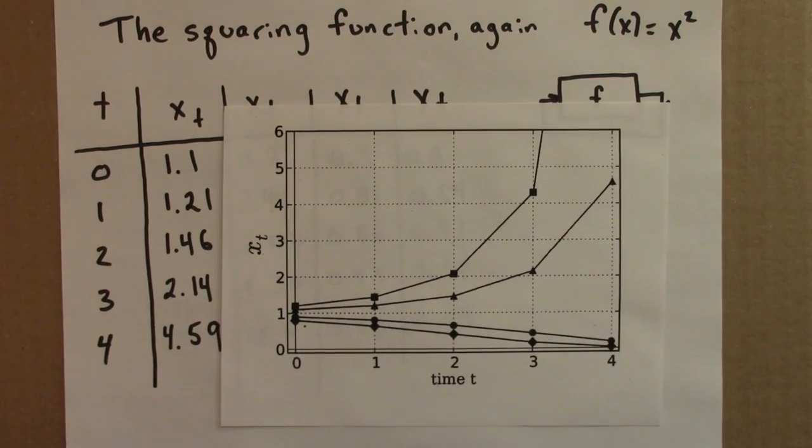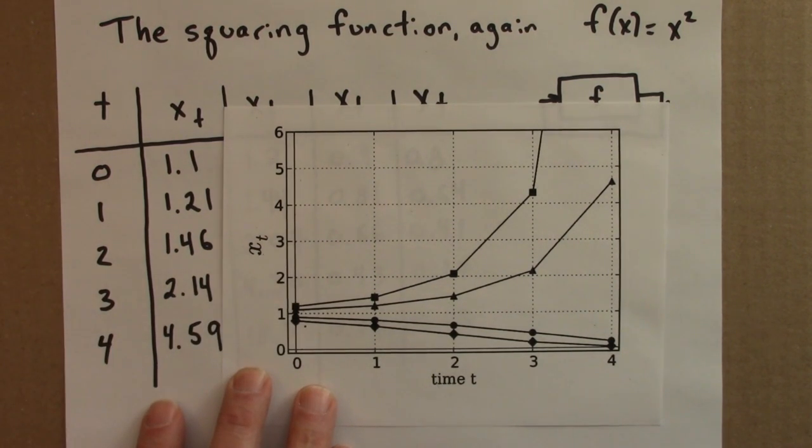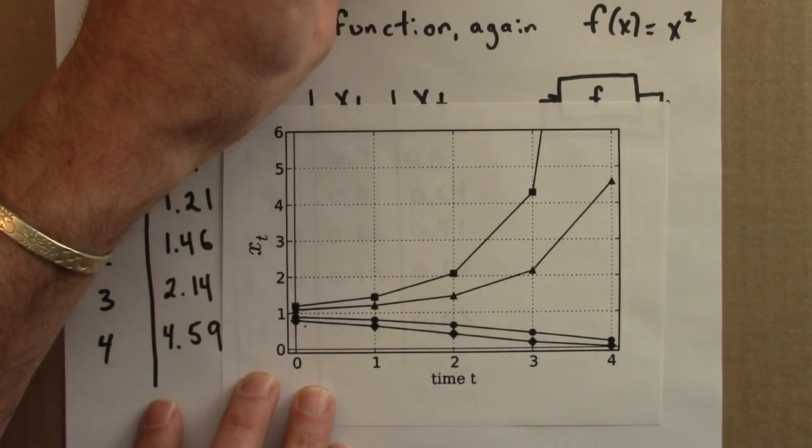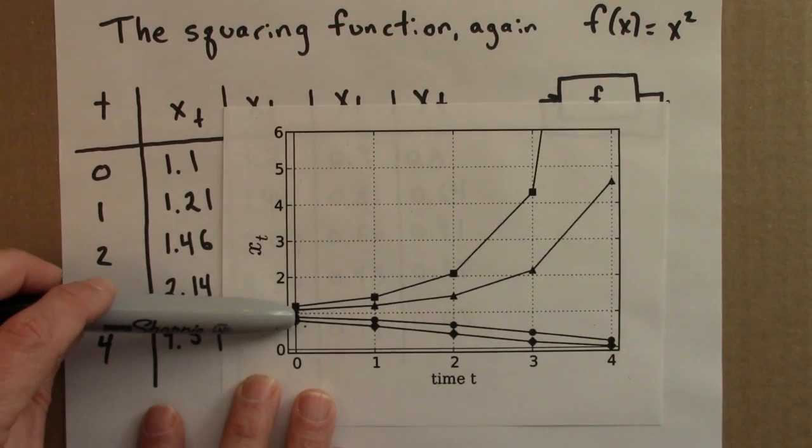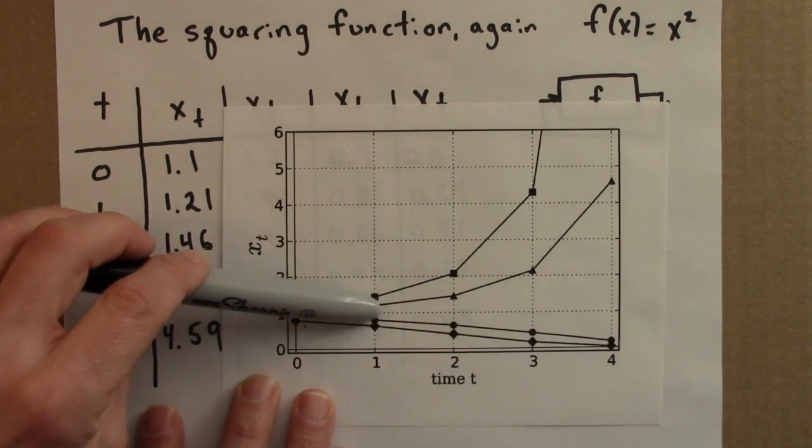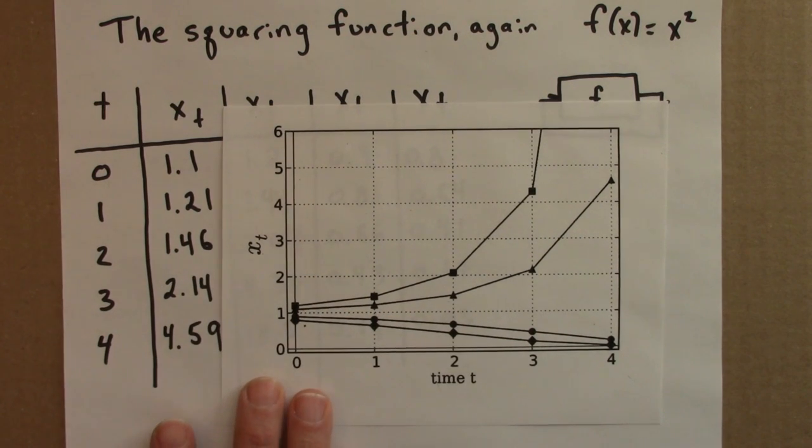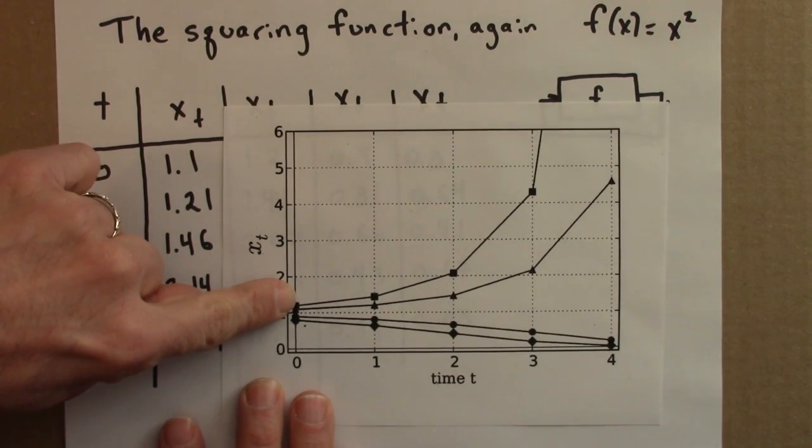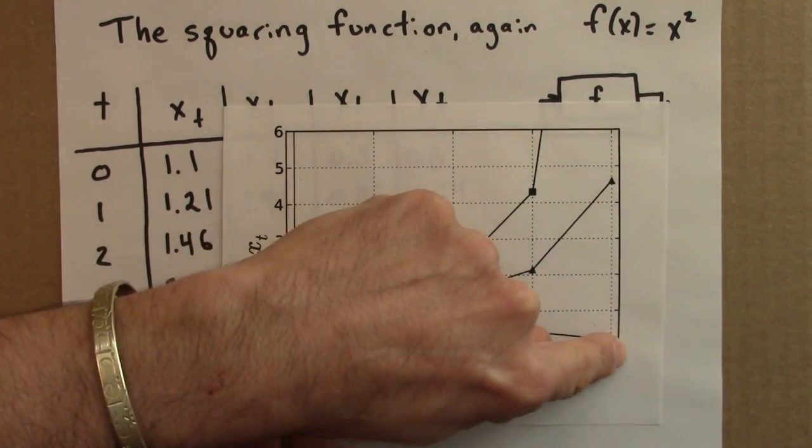You can see I have four different initial conditions. A square, a triangle, a circle, and a diamond. The square, that's 1.2, we can see that growing quite fast, goes off the graph. The triangles are 1.1, those grow. The circles are 0.9, and those are getting close to 0. And then 0.8 also gets close to 0. So this lets us see that numbers larger than 1 will get larger and larger. And numbers between 0 and 1, we suspect, will get closer and closer to 0.